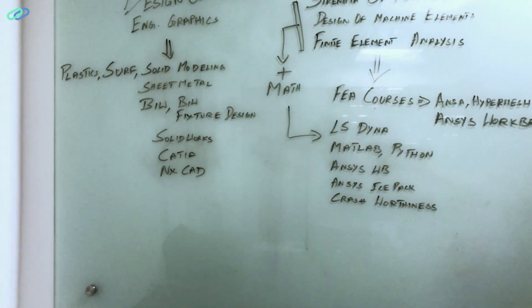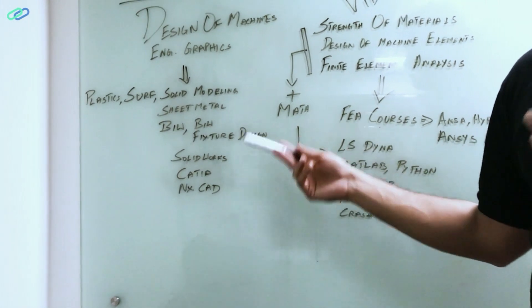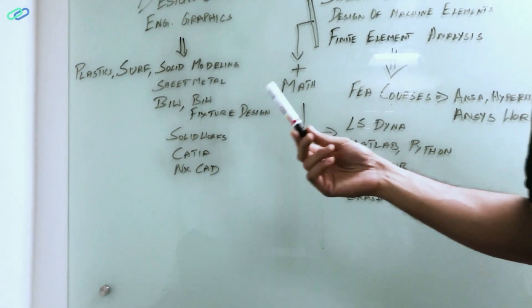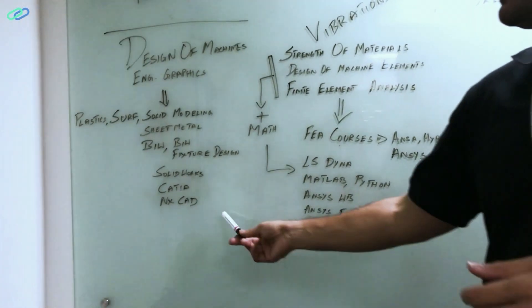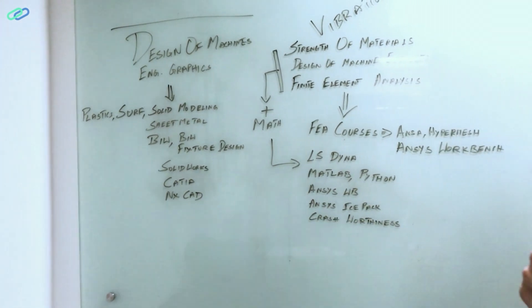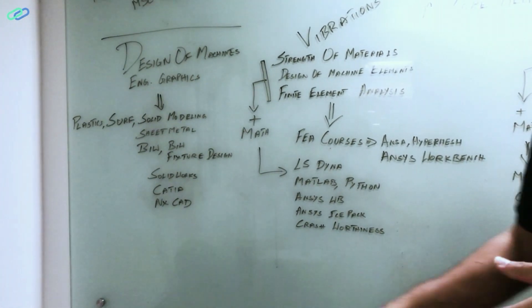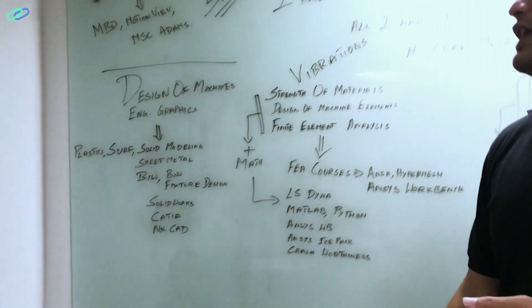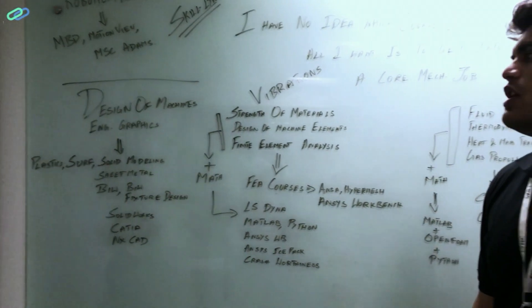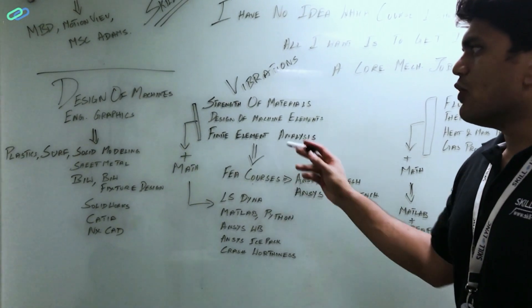You can learn in either of these softwares: SOLIDWORKS, CATIA, NX CAD, in any of these softwares you can learn. Probably CATIA and NX CAD is more used in the industry. So if you learn these things, you can definitely get a design engineering role in a core engineering domain. So, okay, I don't like any of these.